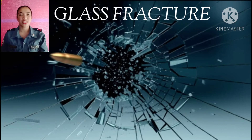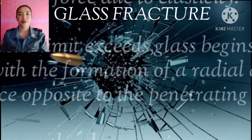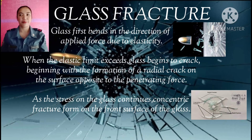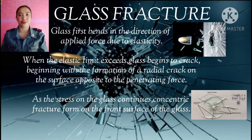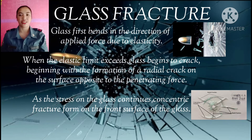Now let's proceed to glass fracture. Basically, glass fracture appears after a striking force. Glass first bends in the direction of the applied force due to elasticity. When the elastic limit is exceeded, glass begins to crack, beginning with the formation of a radial crack or fracture opposite to the penetrating force. As the stress on the glass continues, concentric fractures form on the front surface of the glass.